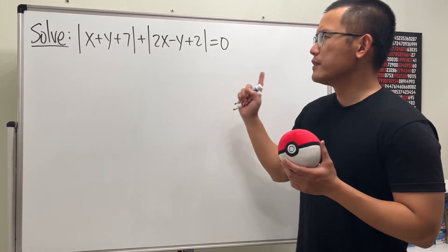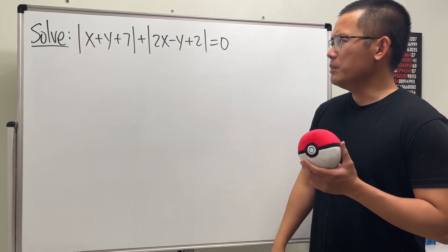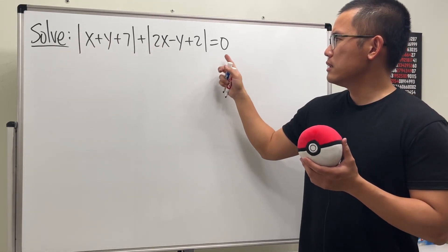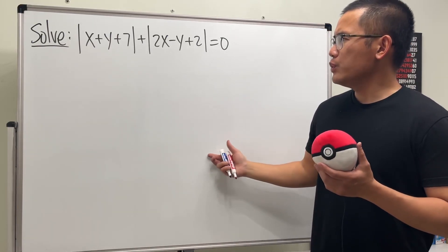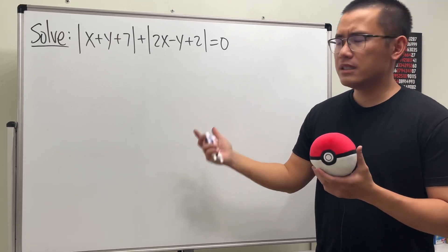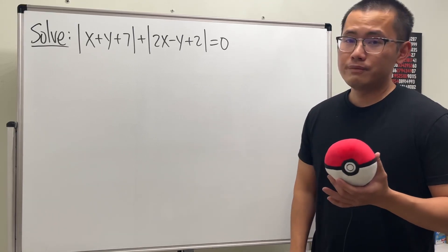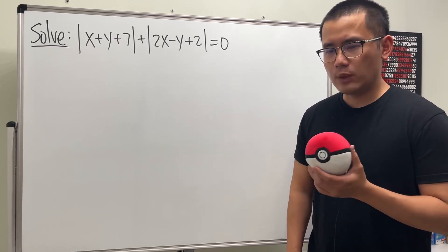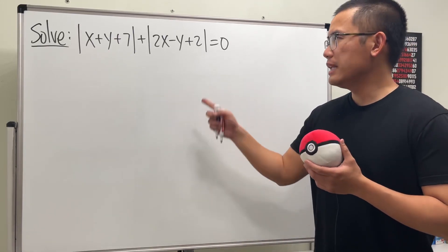All right, here we're going to solve this absolute value equation, and of course we have two absolute values. You might be wondering — because this equation has both x and y and we just have one equation, so this is not a system of equations. How do we get an answer? Shouldn't we have infinitely many answers? Well, we actually just have one x and one y that will make this true. Pause the video and try this first.